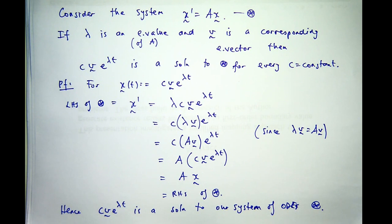Now something else that is important. If I have two solutions to my system star, then any linear combination of those two solutions is also a solution.